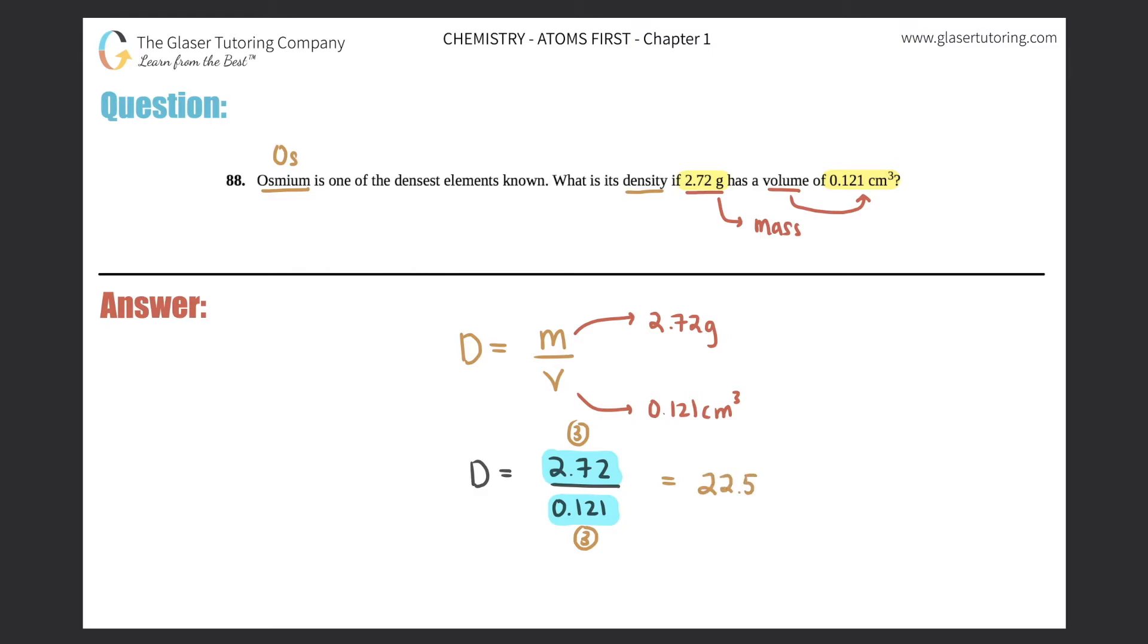And now we need the units. The mass was in grams. The volume was in centimeters cubed. These units do not cancel, so they have to stay. So you just tag them along, grams per centimeter cubed.